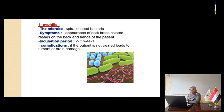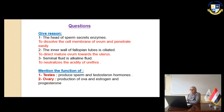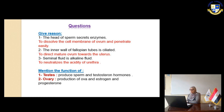Slide number 16 — review questions. Give reason: The head of the sperm secretes enzymes in order to dissolve the cell membrane of the ovum so it can penetrate easily. The inner wall of the fallopian tube contains cilia to direct the mature ovum toward the uterus. The seminal fluid is alkaline in order to neutralize the acidity of the urethra. The function of the testes is to produce sperm and the testosterone hormone. The ovaries produce ova and also produce two hormones: estrogen and progesterone. Thank you.